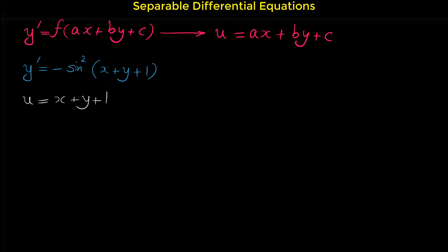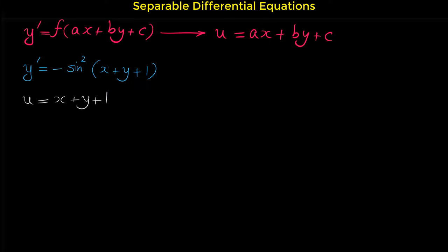Now from this substitution, we have to find y prime in terms of u prime, because we want to replace everything in this differential equation in terms of u. So after we choose u to be x plus y plus 1, we have to take the derivative from both sides of this relation. So u prime equals 1 plus y prime.